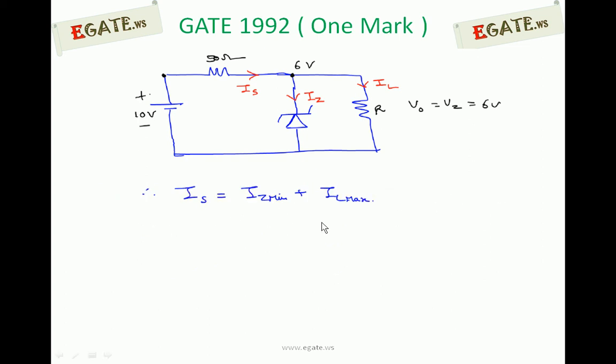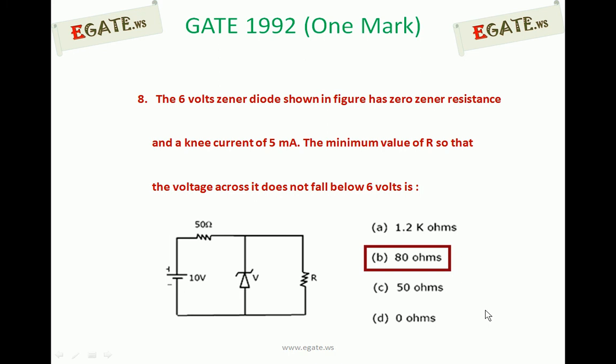IS equals IZ minimum plus IL maximum. We know IS value as 80 mA and IZ minimum as 5 mA. IL maximum equals 75 mA. From this, we can calculate R minimum. R minimum equals V0 divided by IL maximum, which is 6 volts divided by 75 mA, equals 0.08 kΩ, which is 80 ohms. So the right option is 80 ohms, option B.